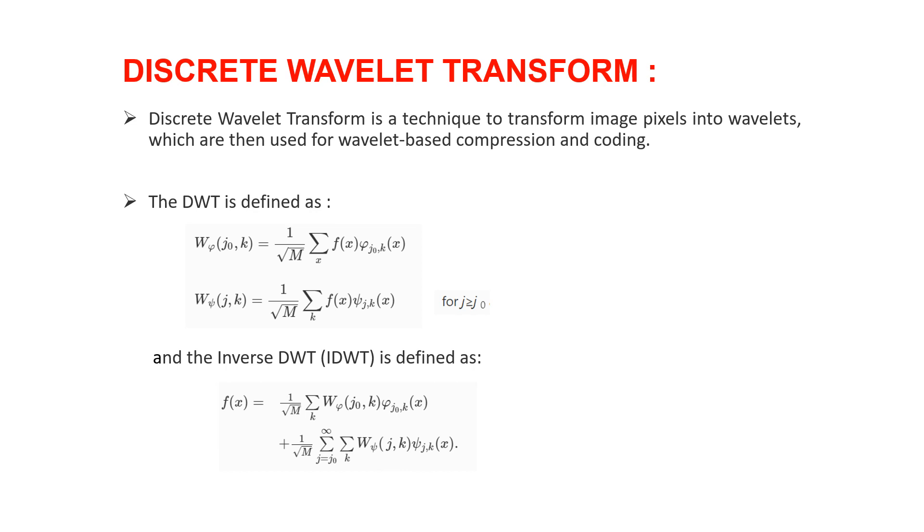The mathematical formulas for discrete Wavelet transform and inverse discrete Wavelet transform are given below. In here, Phi of x is a scaling function and Psi of x is a Wavelet function.